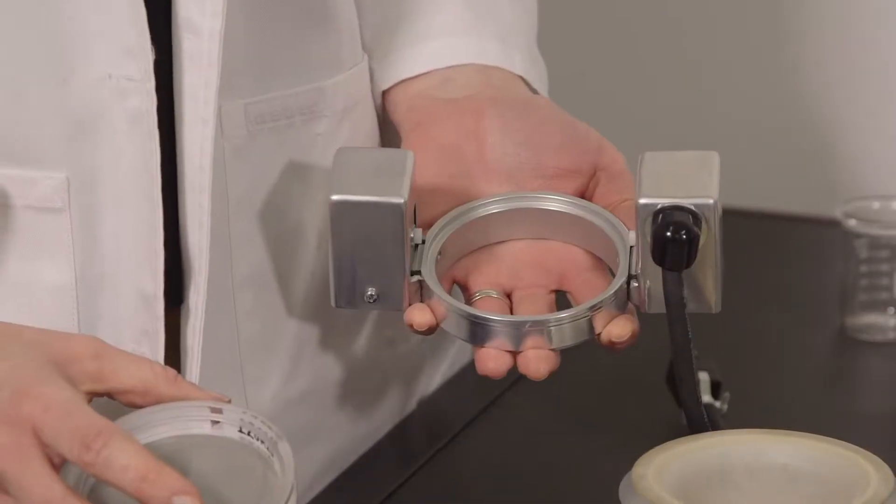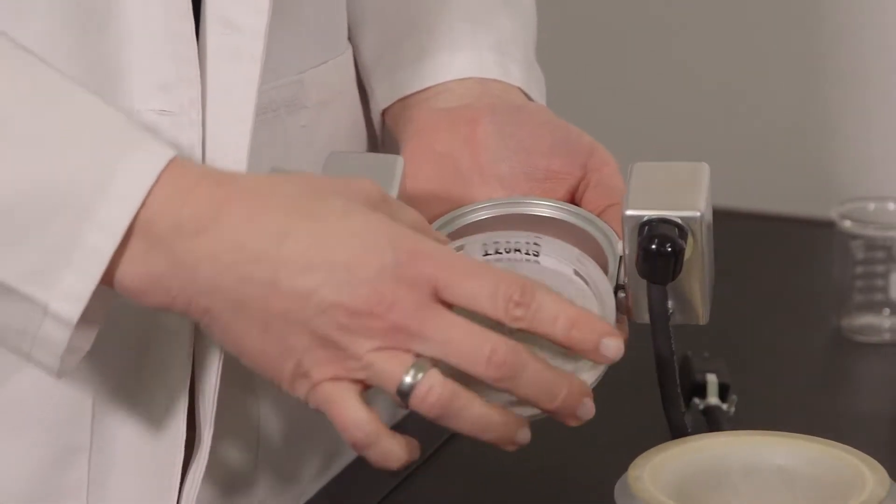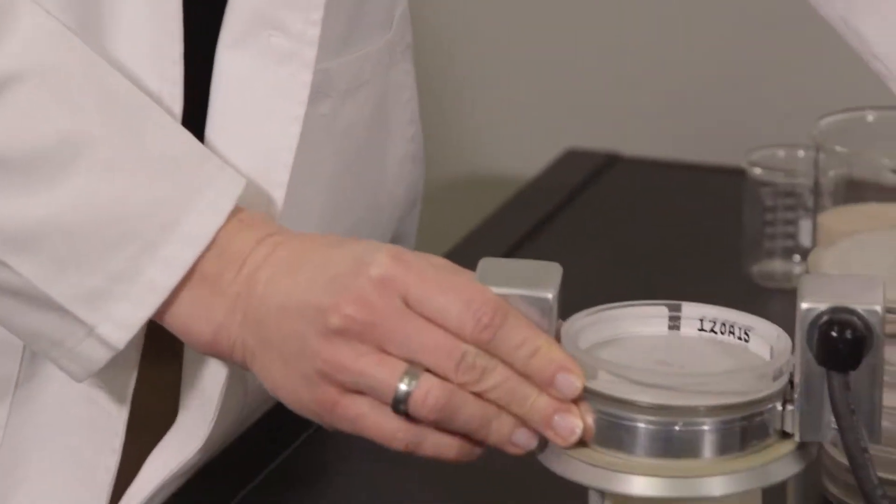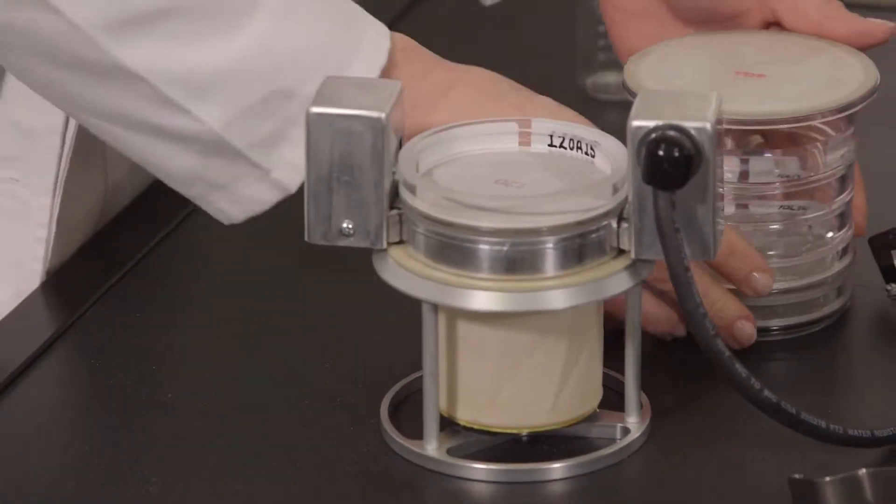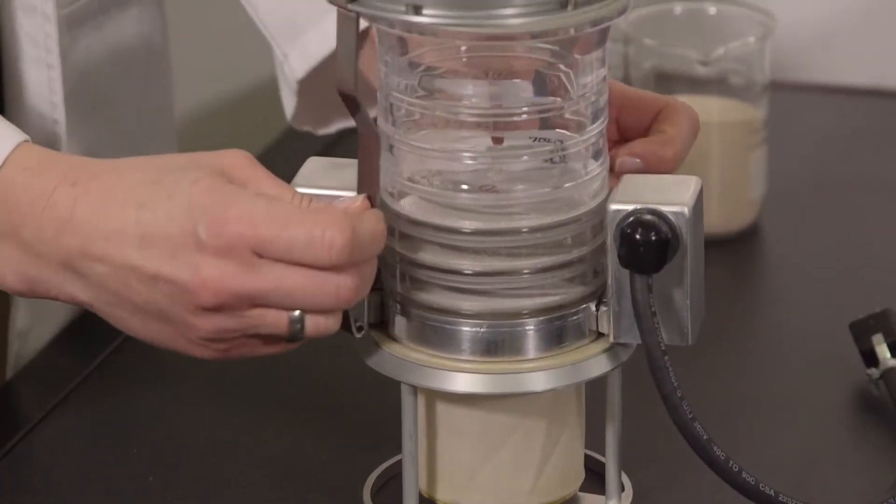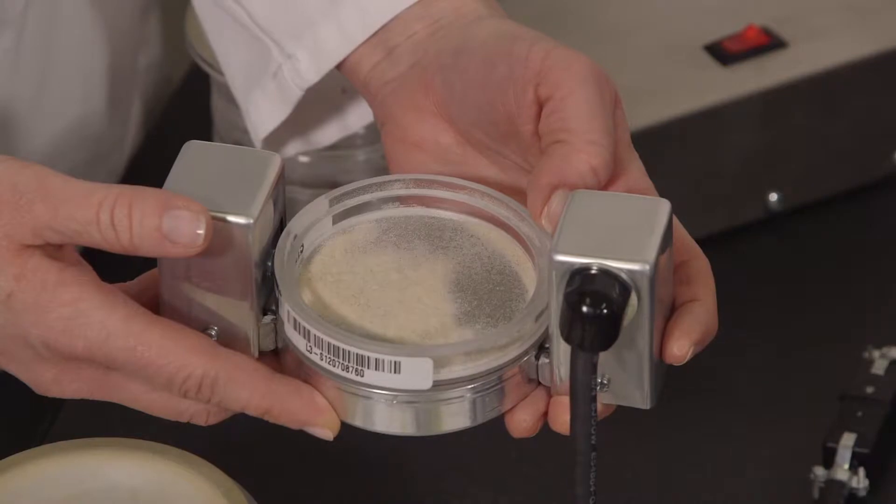Drop the fines collector into the holder and lock into place. Assemble the sieve stack with the finest sieve on the bottom, arranging coarser toward the top.